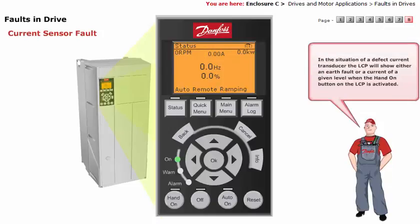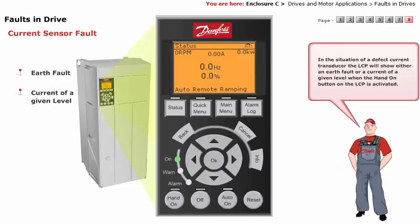In the situation of a defective current transducer, the LCP will show either an earth fault or a current of a given level when the Hand-On button on the LCP is activated.